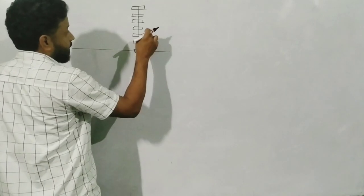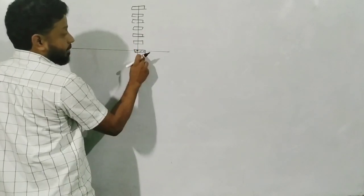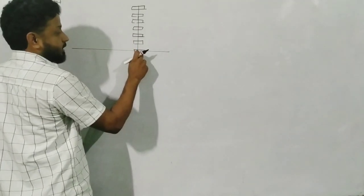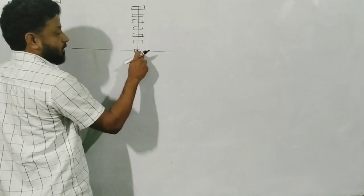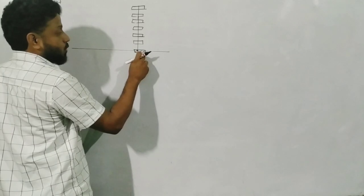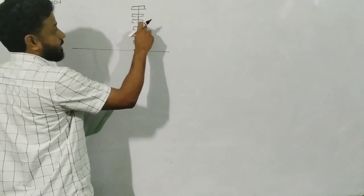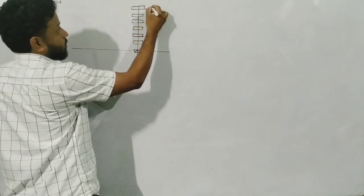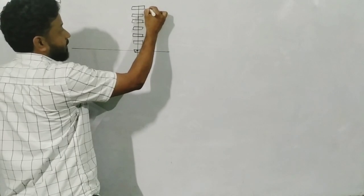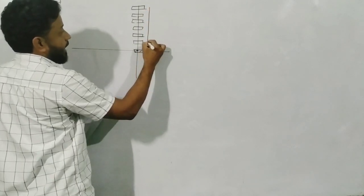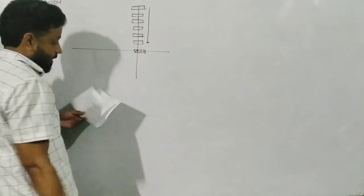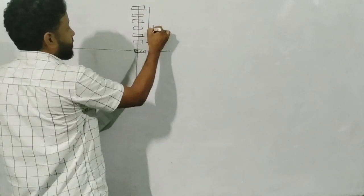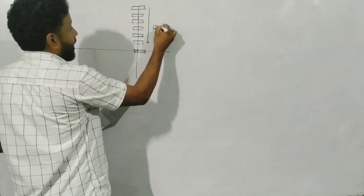Remember, the central fringe is not counted as the first — it is the central zero order. So first, second, third, fourth, fifth, sixth — the distance between the sixth and the first is given as 12.5mm.